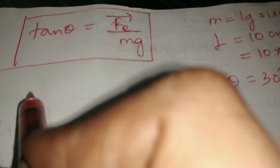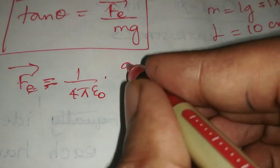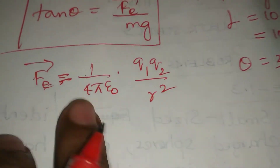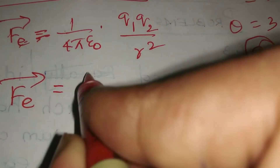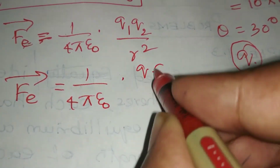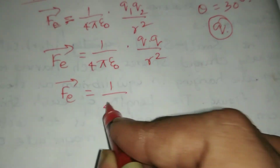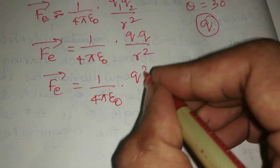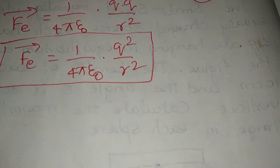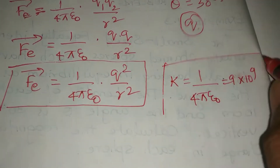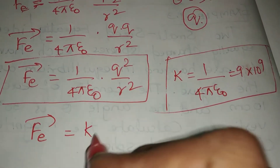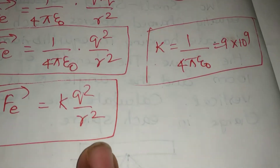The two spheres are equal in magnitude. We calculate Fe using Coulomb's law: Fe = (1/4π ε₀) × q₁q₂ / r². Since both charges are equal (both q), this becomes Fe = (1/4π ε₀) × q² / r², which equals k × q² / r², where k = 9 × 10⁹.